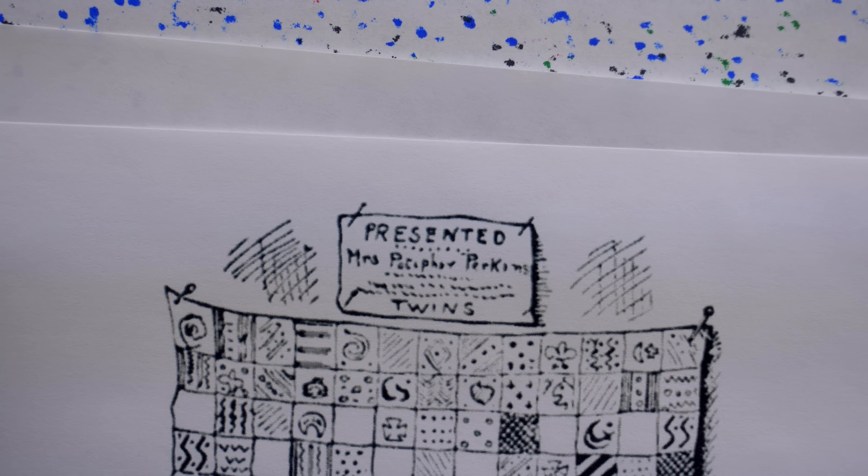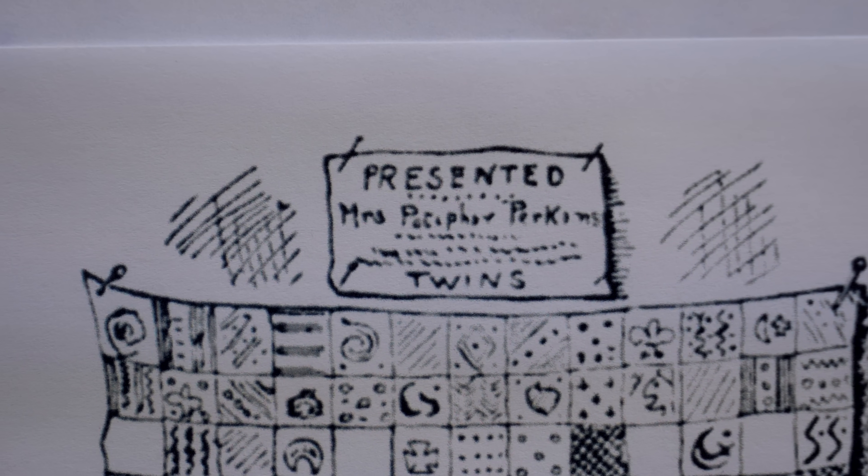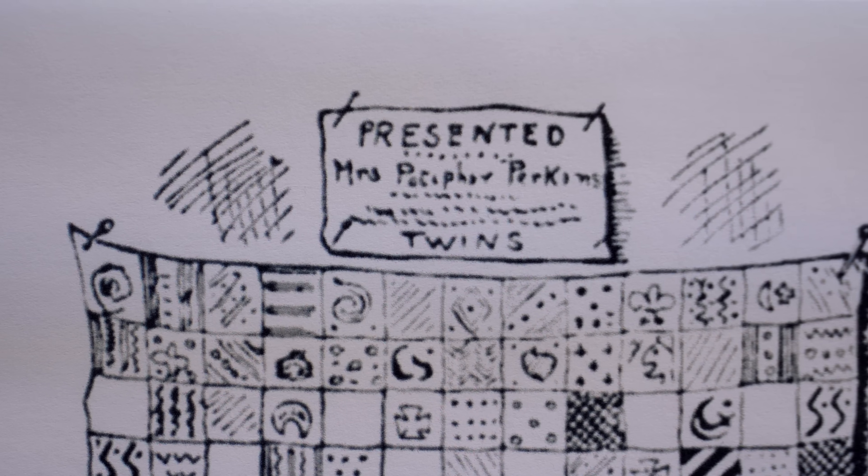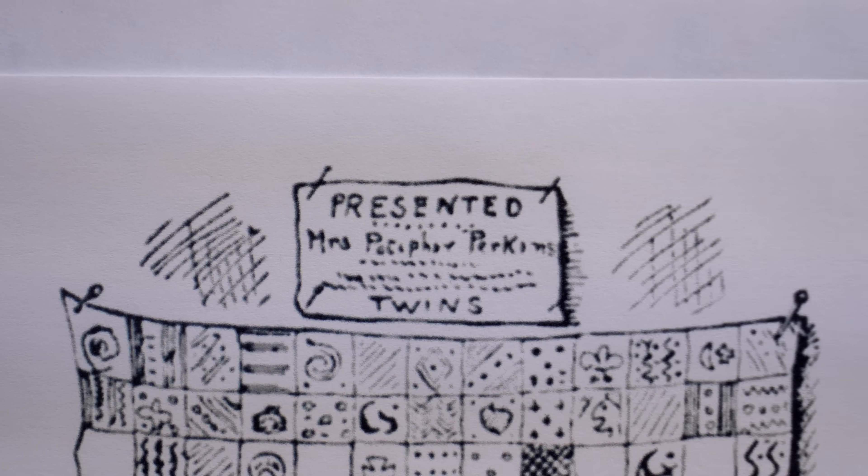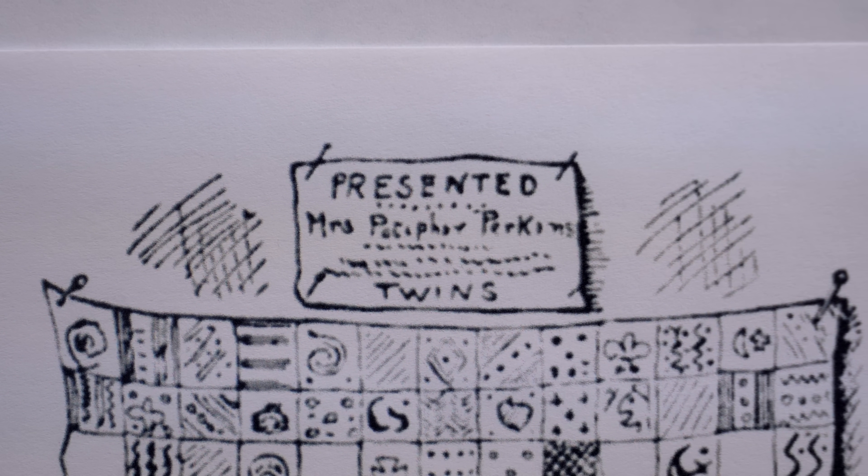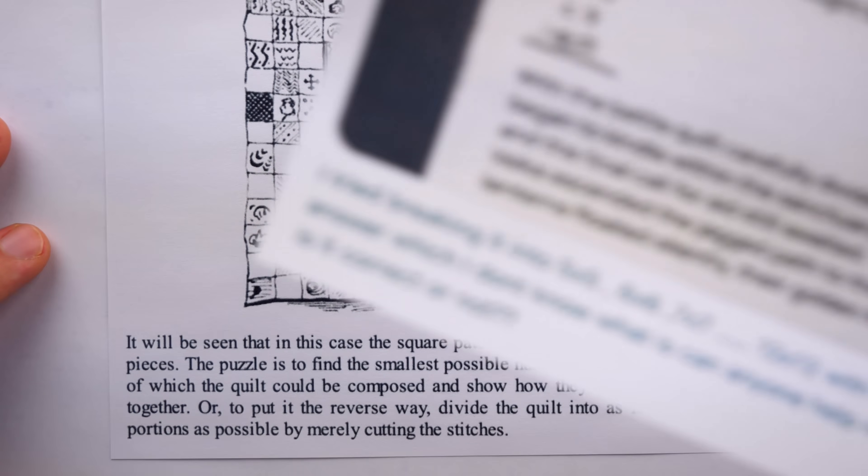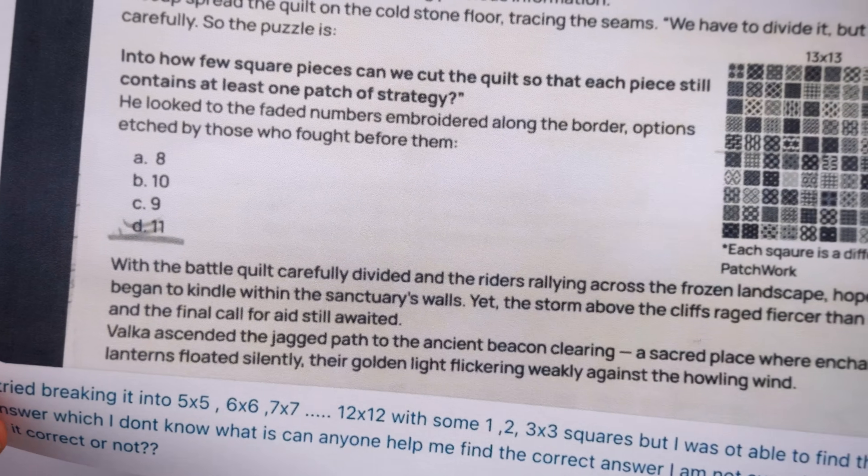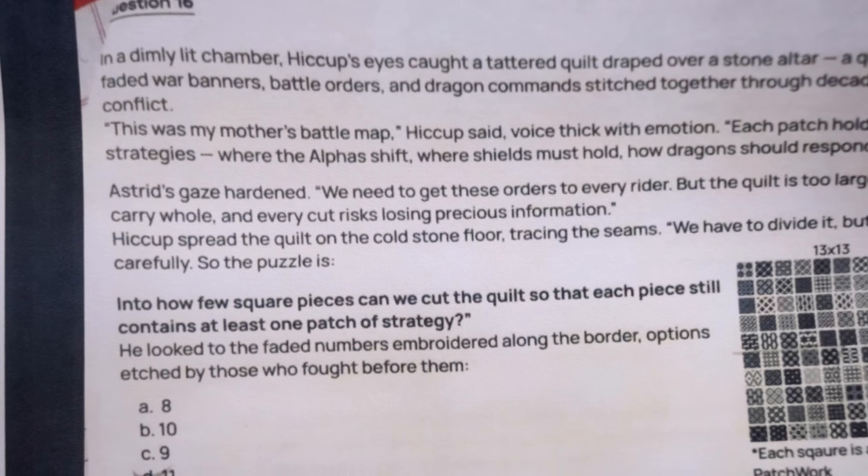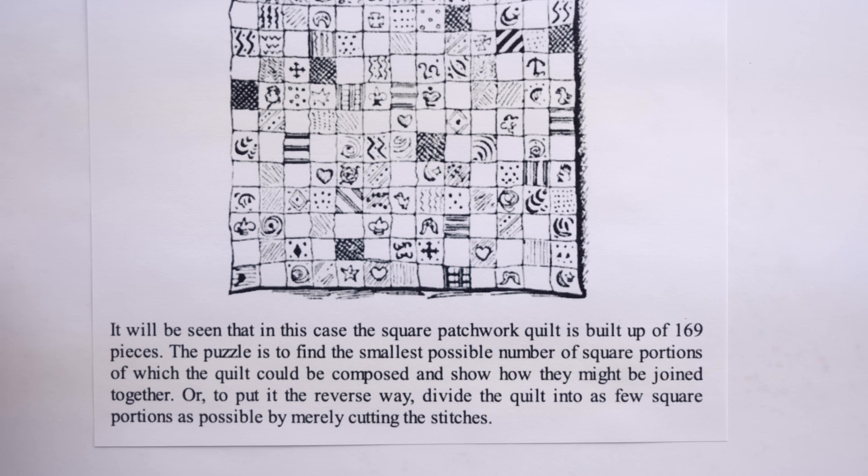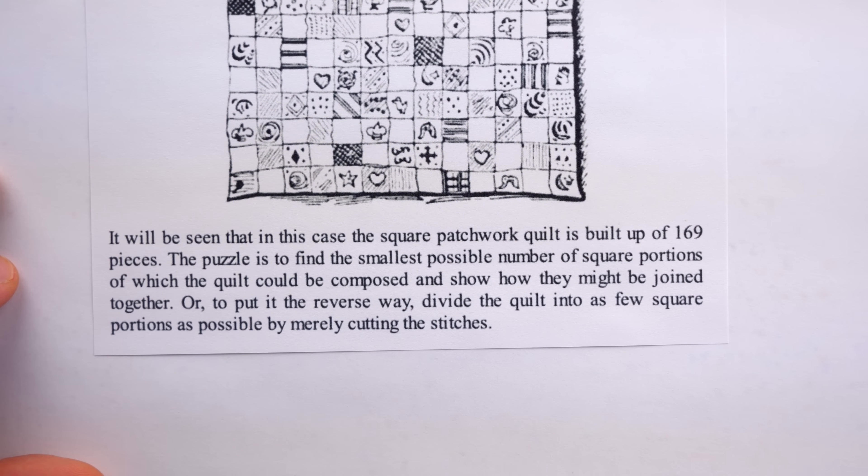And it's here where it gets its popular name, Mrs. Perkins Quilt. Yes, pictured here is the quilt belonging to Mrs. Potiphar Perkins. And you can see the problem that this math packet failed to adequately state in hundreds of words. Henry Dudeney pretty clearly laid out in just a handful of sentences.